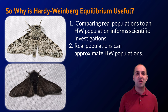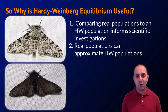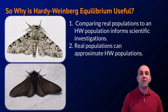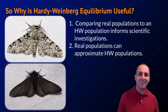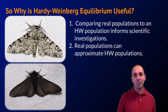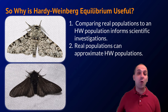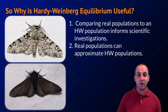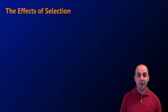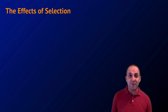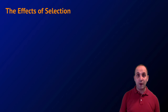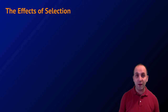Real populations can also approximate Hardy-Weinberg populations. Even though a population isn't actually in Hardy-Weinberg equilibrium, it could be close enough that we can use Hardy-Weinberg calculations to anticipate or model what is happening with allele frequencies in the population over time. That's one of the major ways we measure the effects of evolution.